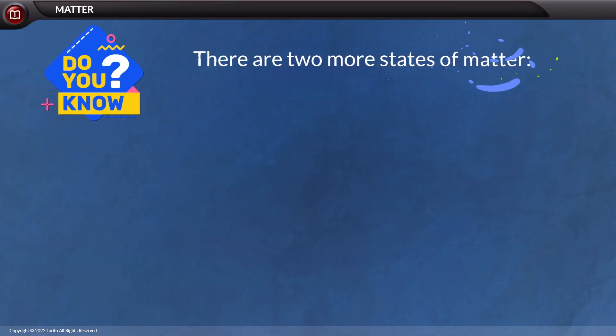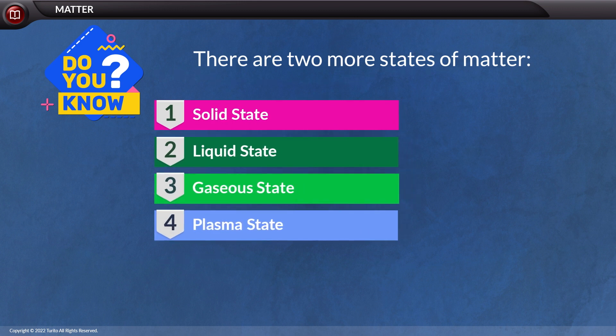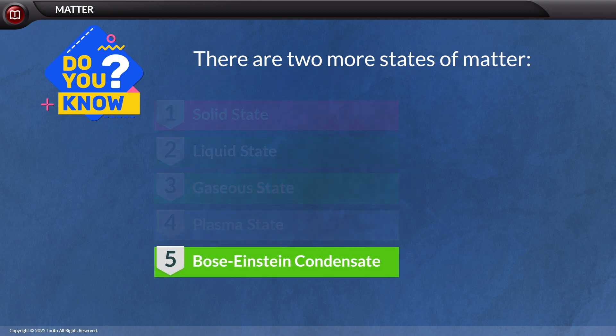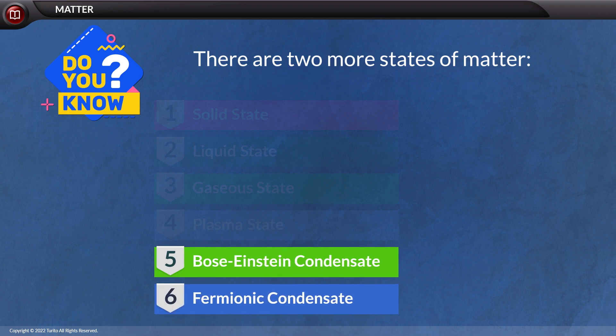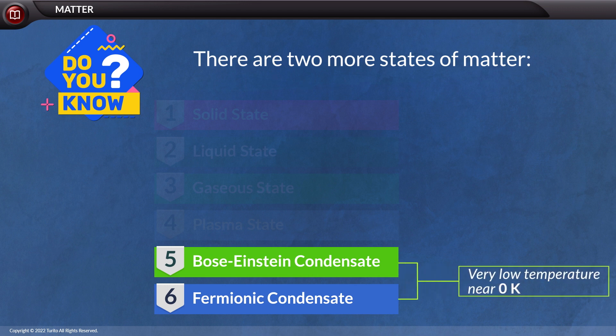Do you know there are two more states of matter, apart from the above mentioned four states? It is BEC, also called Bose-Einstein condensate. And the sixth state of matter is fermionic condensate. These states exist at very low temperatures, near zero Kelvin.